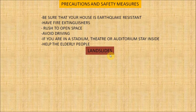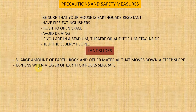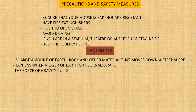Now let's see landslides. A landslide is a large amount of earth, rock and other material that moves down a steep slope. Landslides happen when a layer of earth or rock separates from the layer below it and the force of gravity pulls the loose layer downward. Landslides can be highly destructive — they can bury or sweep away everything in their path and block rivers or cover entire towns.